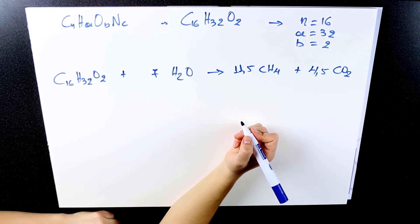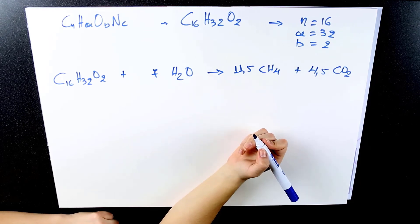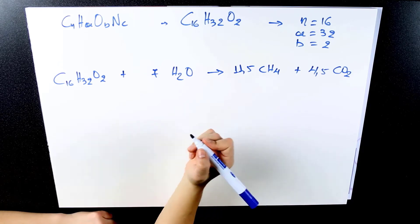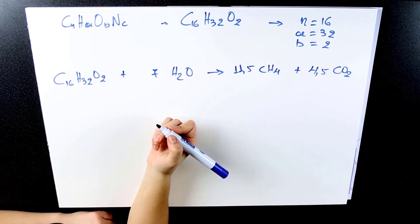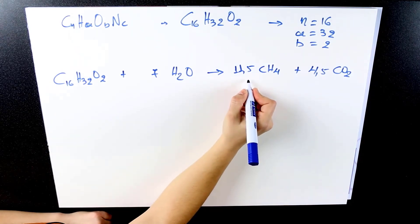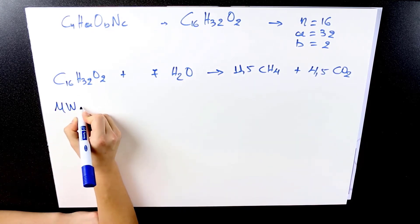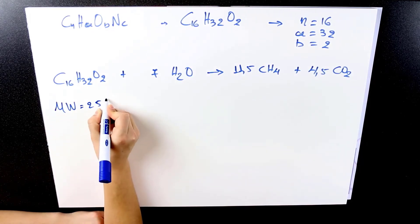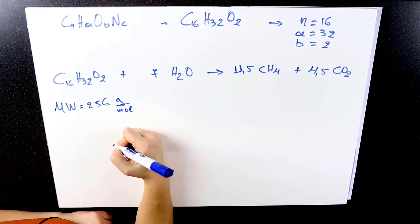In order to see how many cubic meters or liters of methane are produced per 1 kilogram of palmitic acid, we just have to see how many moles of palmitic acid will produce that many moles of methane. In this case, 1 mole of palmitic acid produces 11.5 moles of methane. The molar mass of palmitic acid is 256 grams per mole.